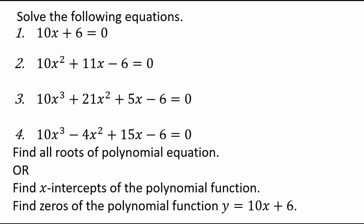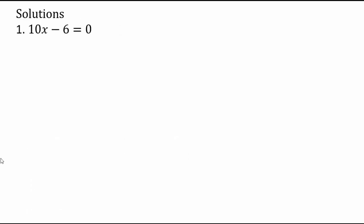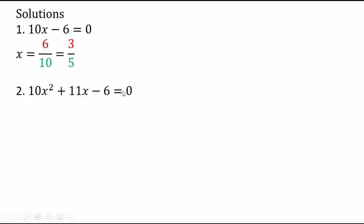You already know how to solve the first two; we'll look at how to solve problems 3 and 4. For the first equation, which is 10x minus 6 equals 0, by undoing — add 6 and divide by 10 — which gives you 6 over 10, or 3 fifths by reducing the fraction. So x equals 3 fifths is your solution.